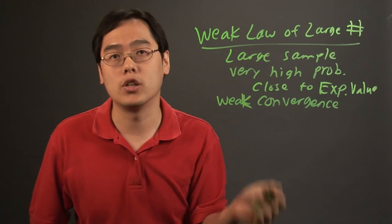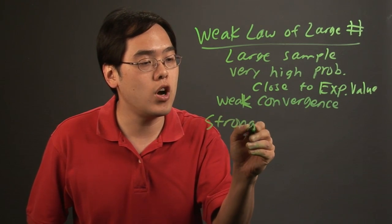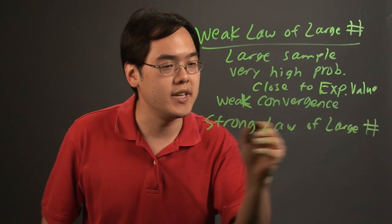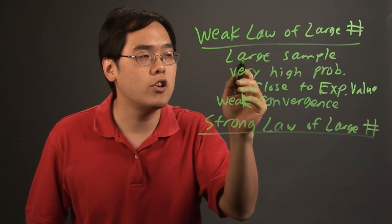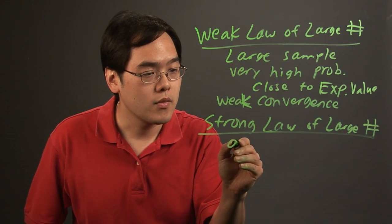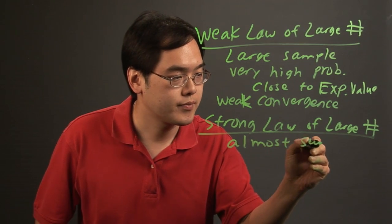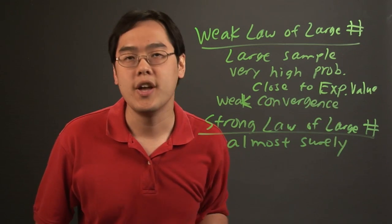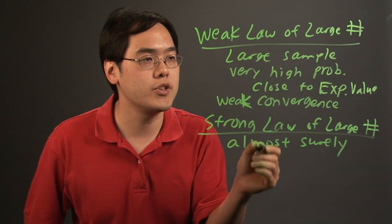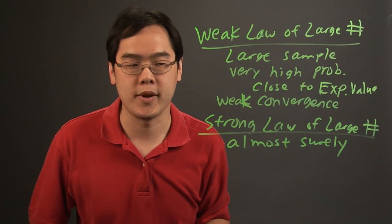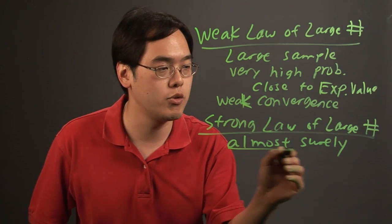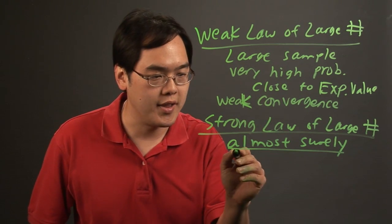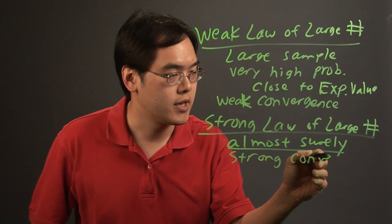How does that compare to the strong law of large numbers? The strong law of large numbers is a little more definitive — it says the large sample will almost surely converge to the expected value. Sounds like just short of a done deal. So while the weak law says there's a very high probability it will get close, the strong law says it's almost surely going to get there. That's related to the concept of strong convergence.